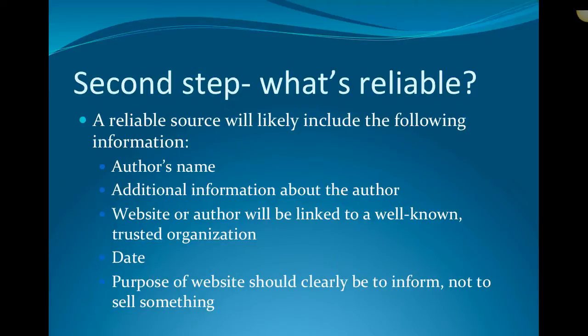The next step: you need to consider what research is reliable. When you're checking websites, anybody can post anything on the internet, so it's very difficult to tell if the research you've found is reliable. Here are a few things to look for. First, the article ought to have an author. If it doesn't have an author, it probably is not a reliable source. The article should have a clear author's name at the beginning or end. Most reliable websites will give you additional information about the author — sometimes you can click on the author's name or search for them on the site to learn why you can trust them.